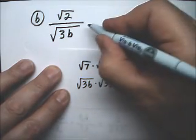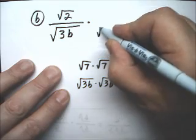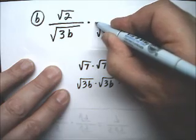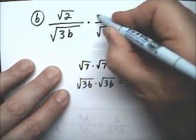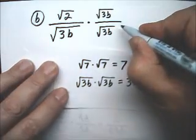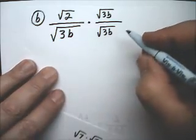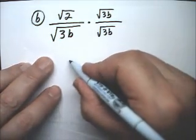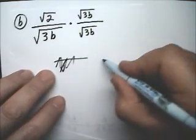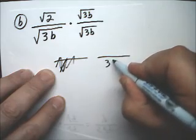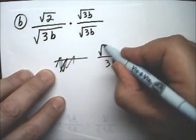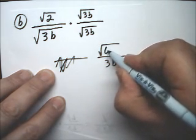So, to rationalize this denominator, I'm going to multiply the denominator by the square root of 3B. And if I do that to the denominator, I have to do it to the numerator. In the denominator, I just end up with 3B. And here I end up with the square root of 6B.